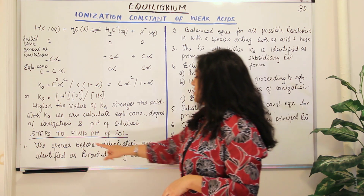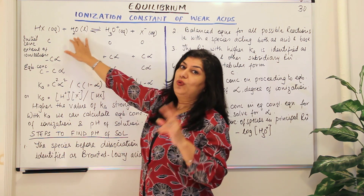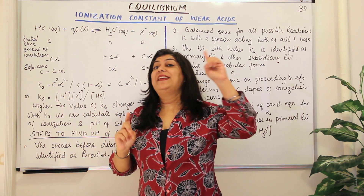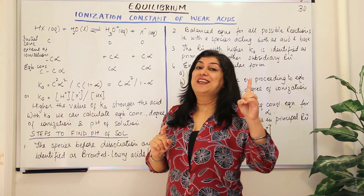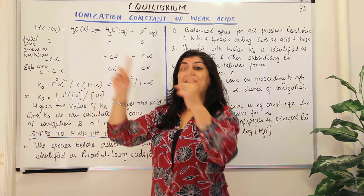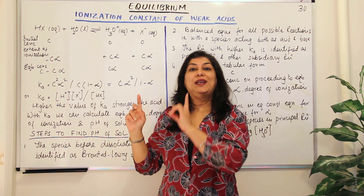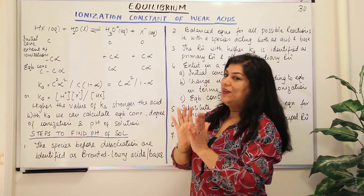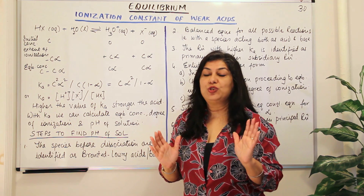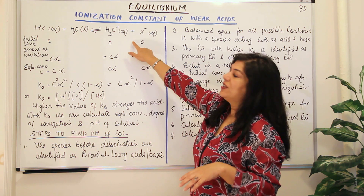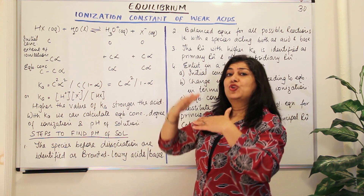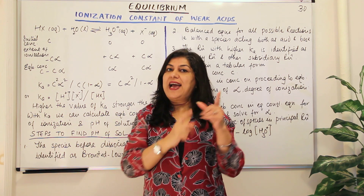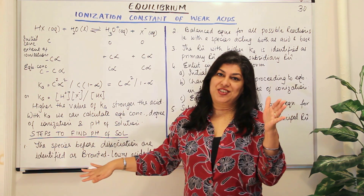The first step is to identify which species is an acid and which is a base. You'll get two equations: HX + H2O gives H3O+ + X−, and there's another reaction — water with water — giving the ionic product of water where one molecule acts as acid and the other as base, producing H3O+ and OH−, with equilibrium constant Kw = 10⁻¹⁴. You compare these Ka values to identify the stronger acid, which gives the main reaction.